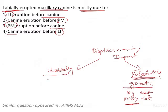For a labially erupting canine, the etiology is very different — it is crowding. In 83% of cases where there is a labially positioned canine, the reason is crowding.